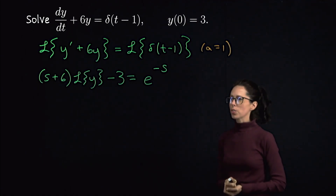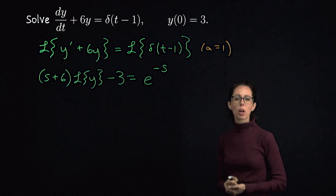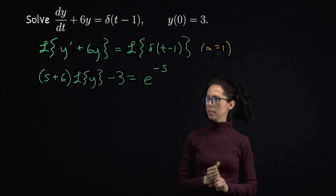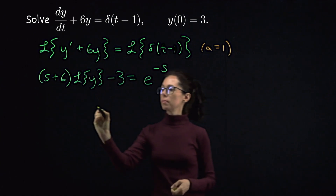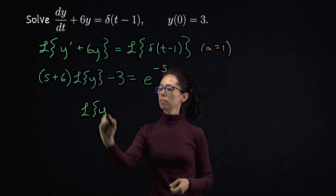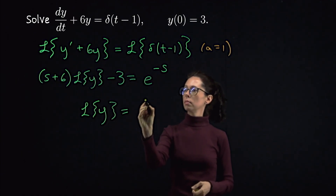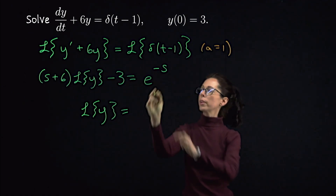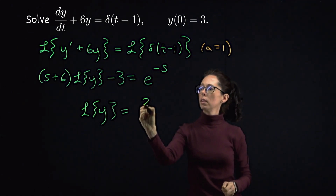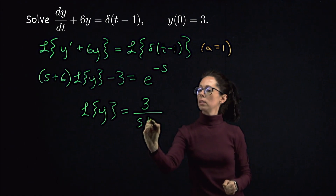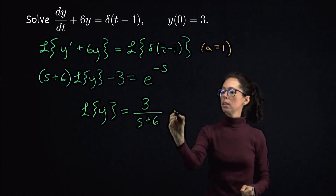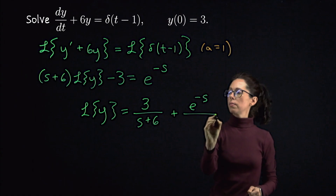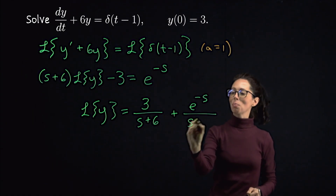Let's isolate the Laplace transform of y — I think we can do it all in one step. We'll bring 3 over and divide by s plus 6, keeping the two terms on the right-hand side separate. So we get 3 over s plus 6, plus e to the negative s divided by s plus 6.